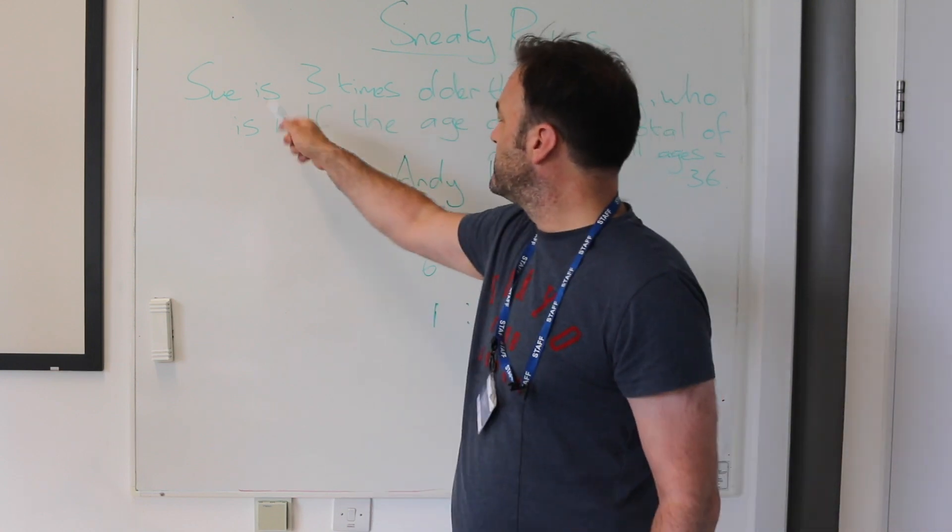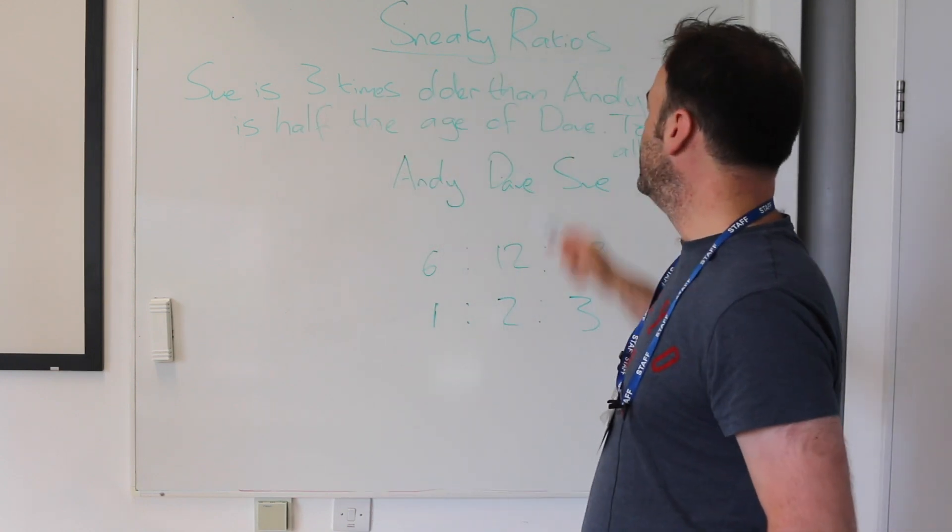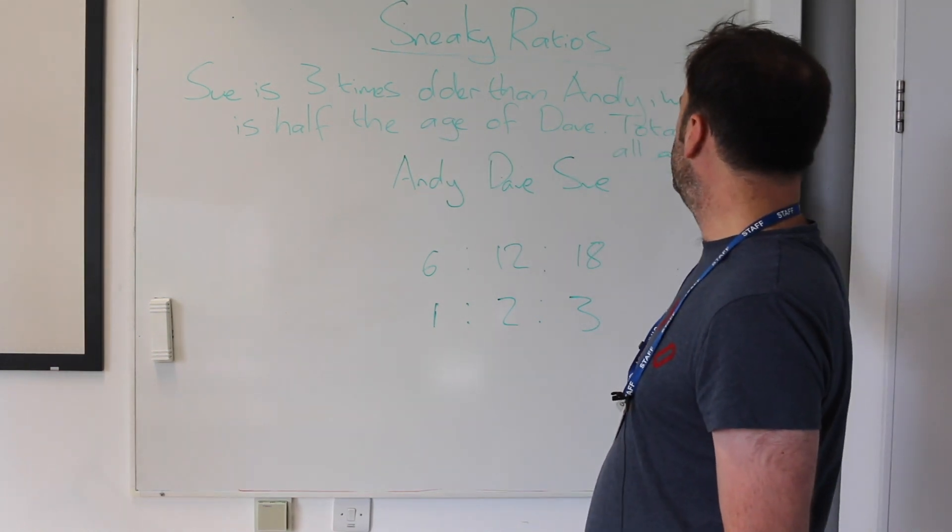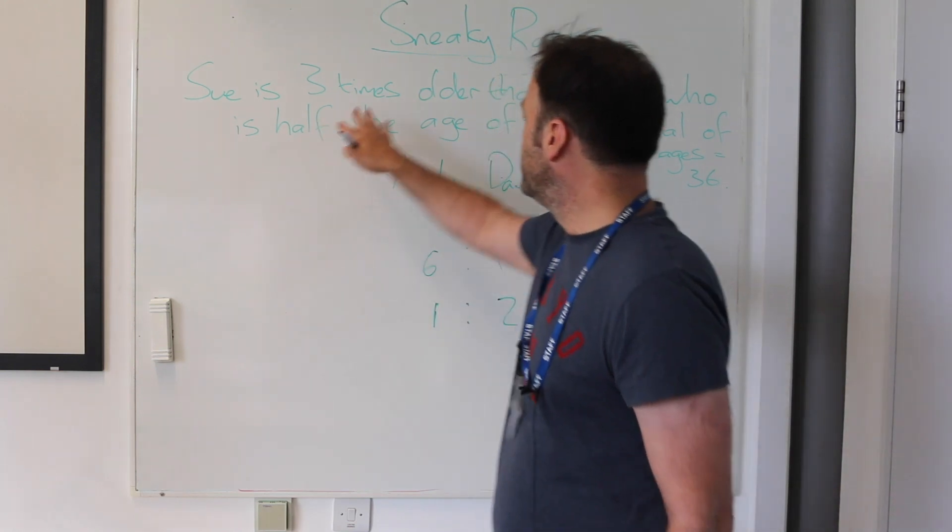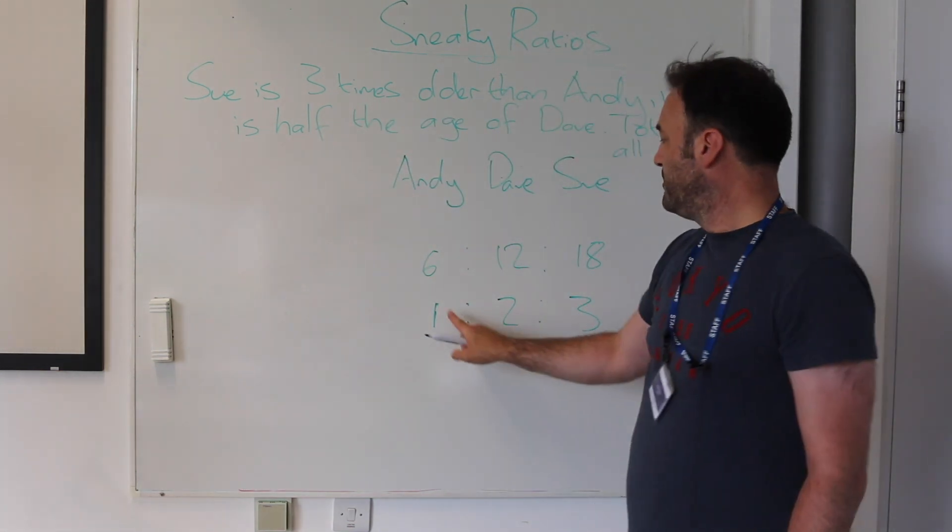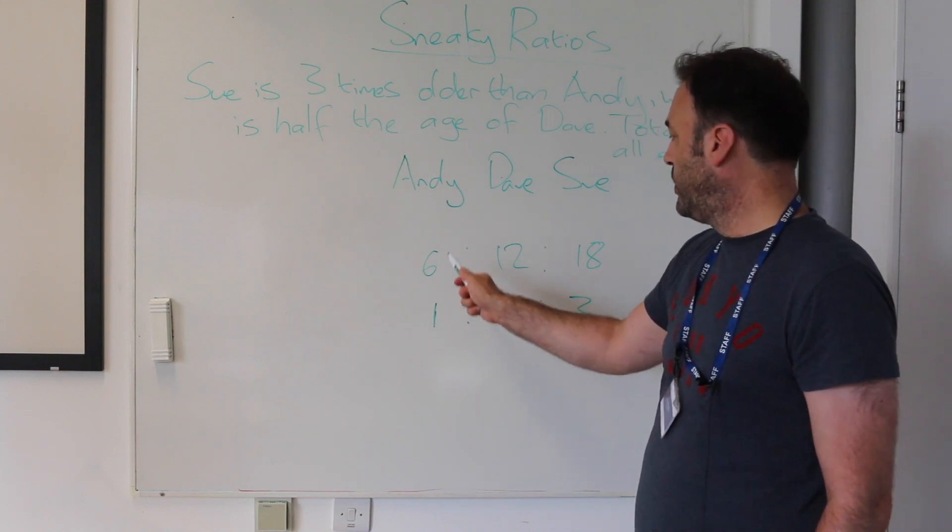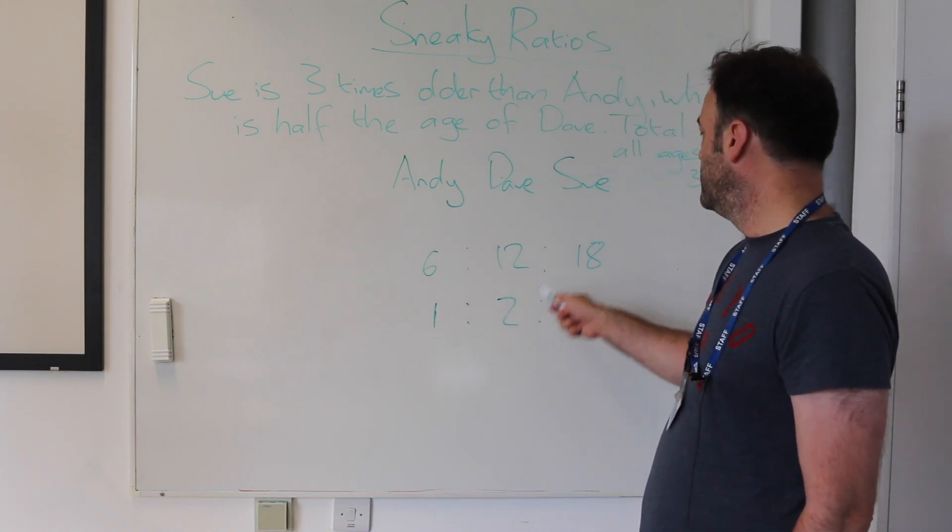So here we've got Sue is three times older than Landy who is half of the age of Dave, their total ages are 36. So we can translate this and I will get a child to actually write this down as 1 to 2 to 3.